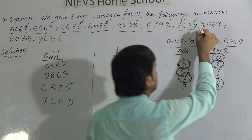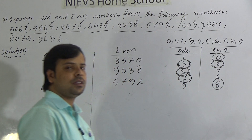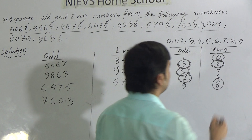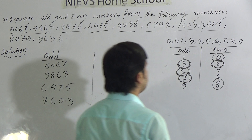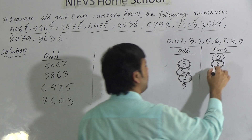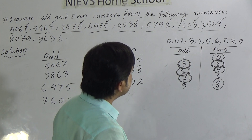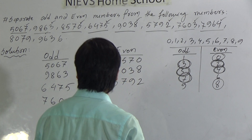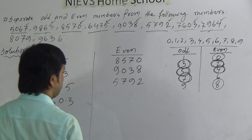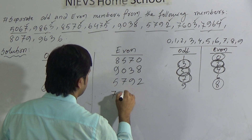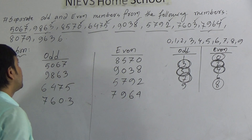Now go to the next number: 7964. Here 4 is in the unit place, and we know 4 is even. As 4 is even, we can say the number is also even. We write 7964 under even.